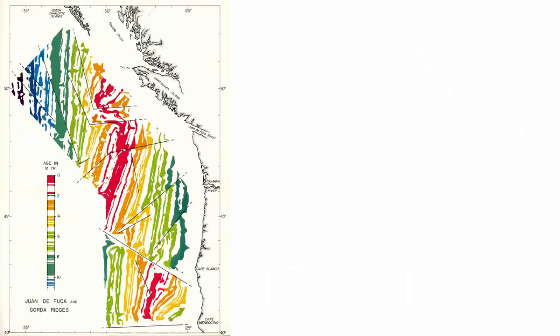So, back to measuring speed and direction. Let's use this normal polarity reading that represents 7 million year old rock. Where was this rock when it formed? Here at the spreading center.